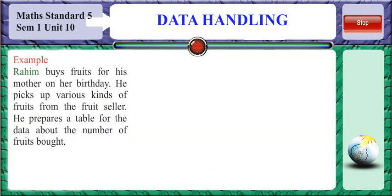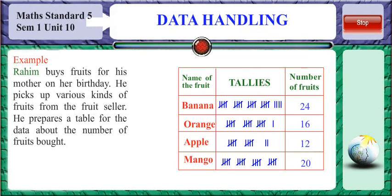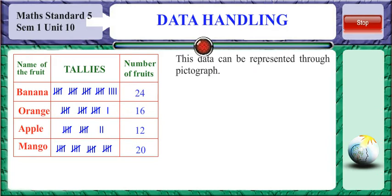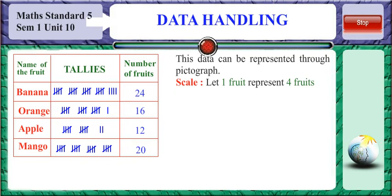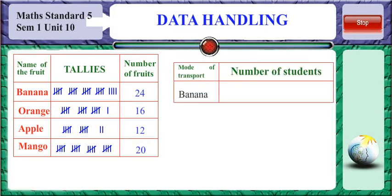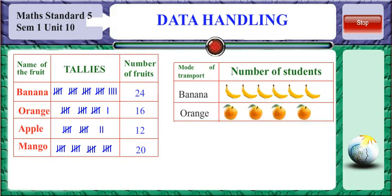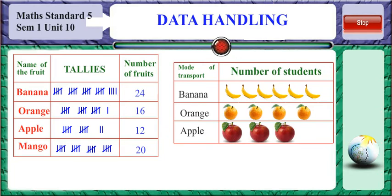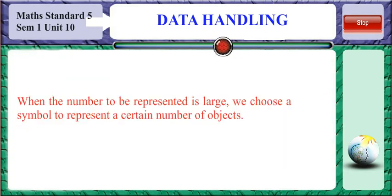Rahim buys fruits for his mother on her birthday. He picks up various kinds of fruits from the fruit seller and prepares a table for the data about the number of fruits bought. To represent this through a pictograph, let one fruit symbol represent 4 fruits, since all the numbers are multiples of 4. So 6 banana symbols represent 6 into 4, which equals 24 bananas. Similarly, 4 oranges drawn, each representing 4 oranges, gives 4 into 4 which equals 16 oranges. Similarly, 3 apples and 5 mangoes have been drawn.